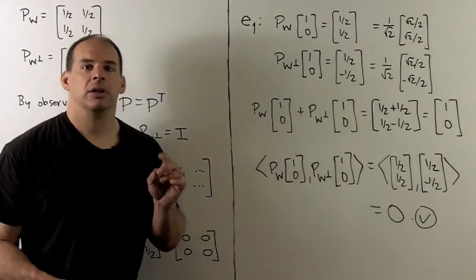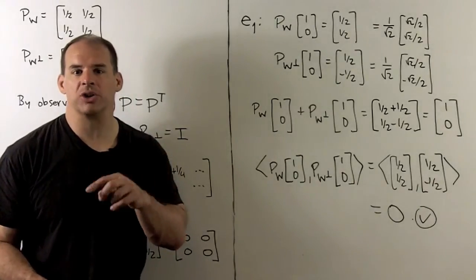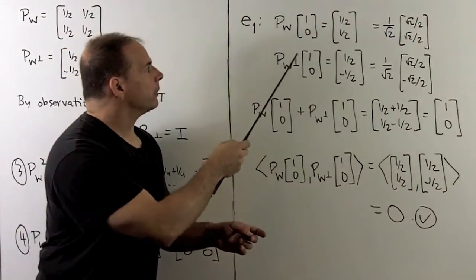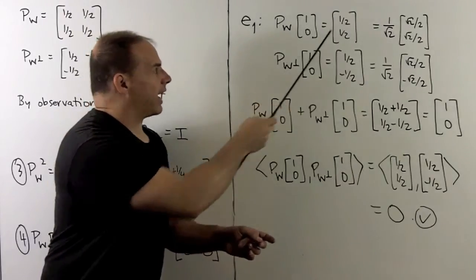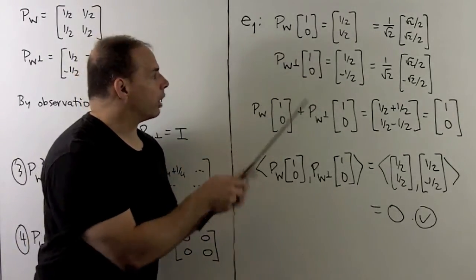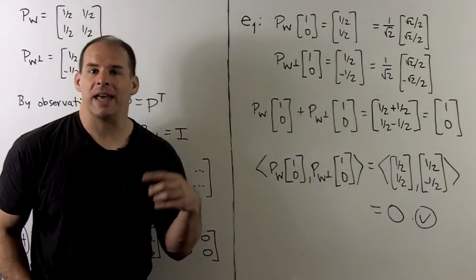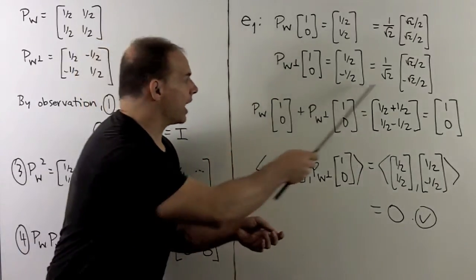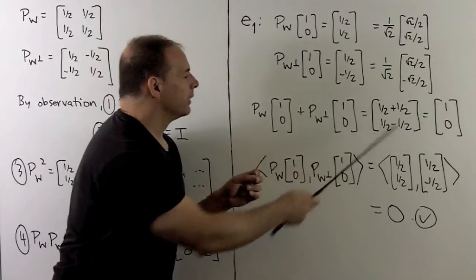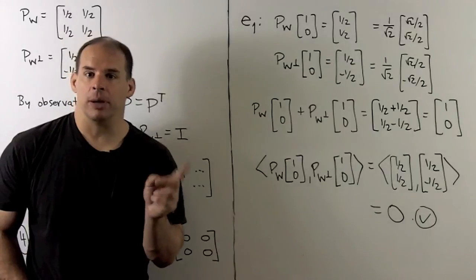Now let's use these projection maps to decompose E1 = (1,0) into a direction parallel to (1,1) and a direction perpendicular to (1,1). Applying P_W to (1,0), we get (1/2, 1/2), which is a multiple of (1,1) — so that lives in W. For the perpendicular part, applying P_{W⊥} gives (1/2, −1/2). Taking the inner product of (1,2, −1/2) with (1,1) gives zero, confirming it's in W⊥. Adding the two pieces gives back our original vector (1,0), and their inner product is zero — as expected since one is in W and the other in W⊥.